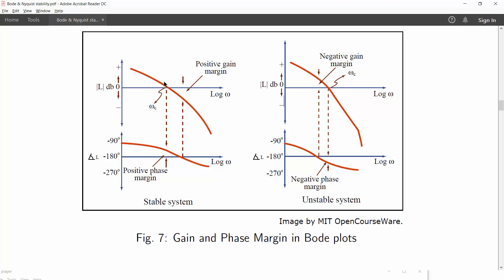So it is this point. While the point on phase plot where the plot crosses the minus 180 degree line, this point is called phase crossover frequency. And the gain crossover frequency and phase crossover frequency are in short abbreviated as Omega GC and Omega PC.